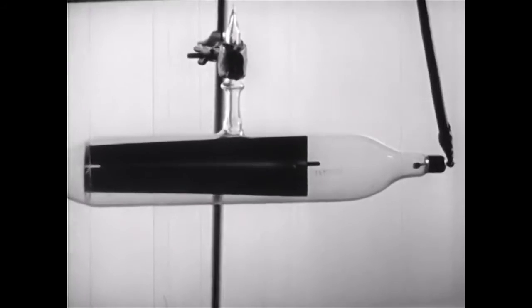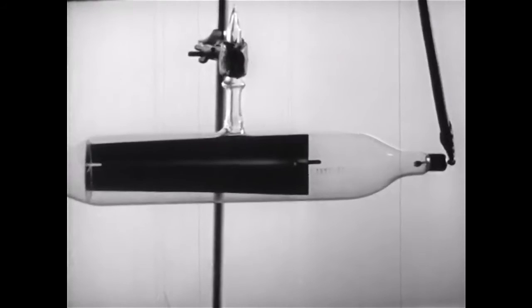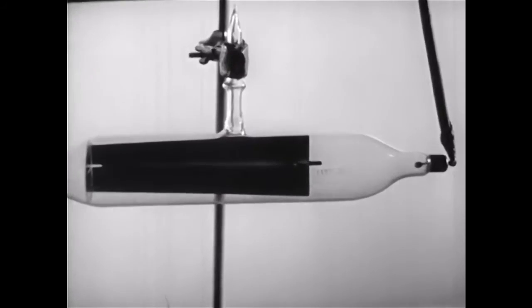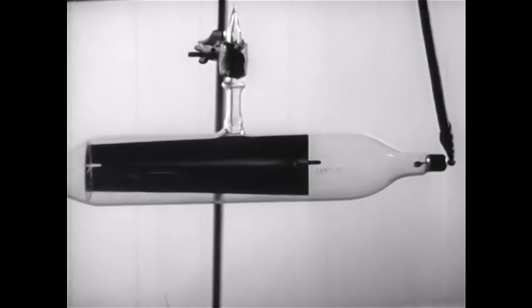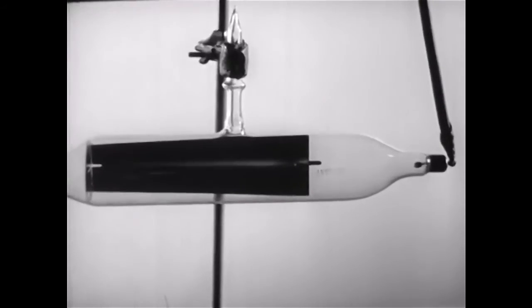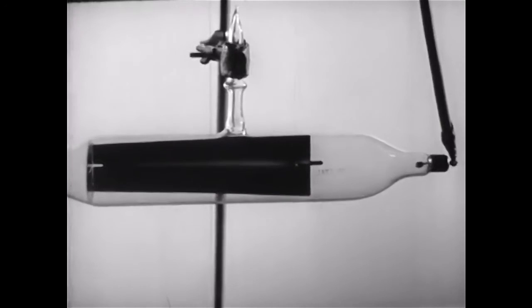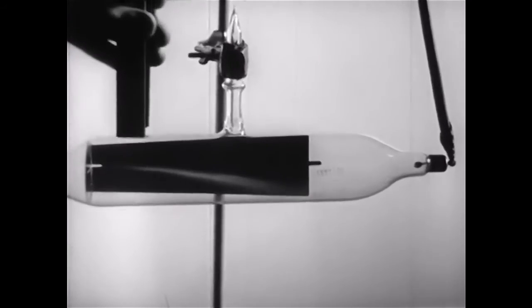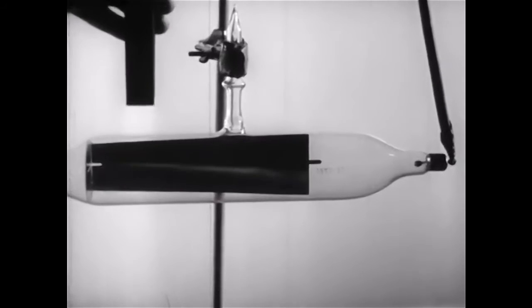To render the path of these charges visible, we have placed a screen of zinc sulfide inside the tube, eliminating all but a narrow beam of charges by means of a slit. When the charges strike the screen, their path is rendered luminous. If a magnet is brought near, the path of the charges is deflected, just as a current in a wire would be.